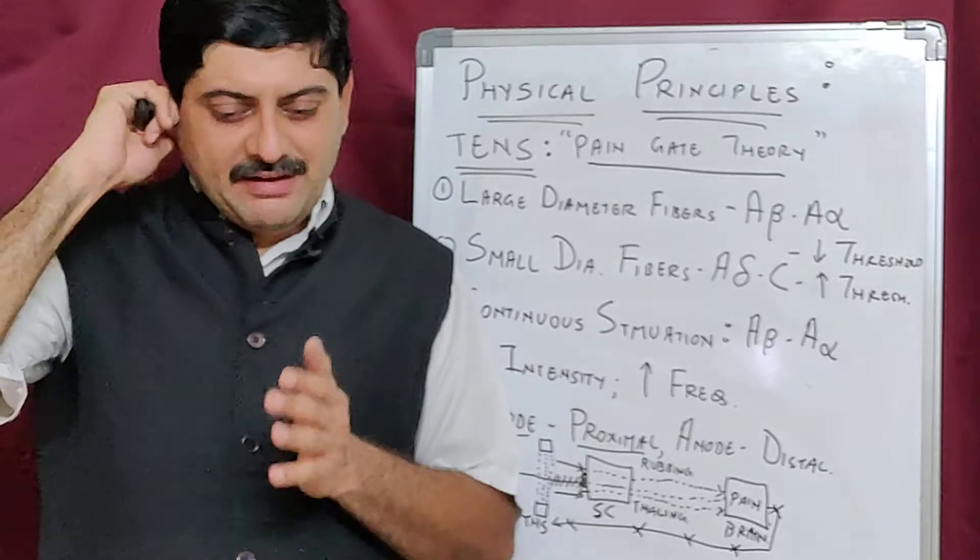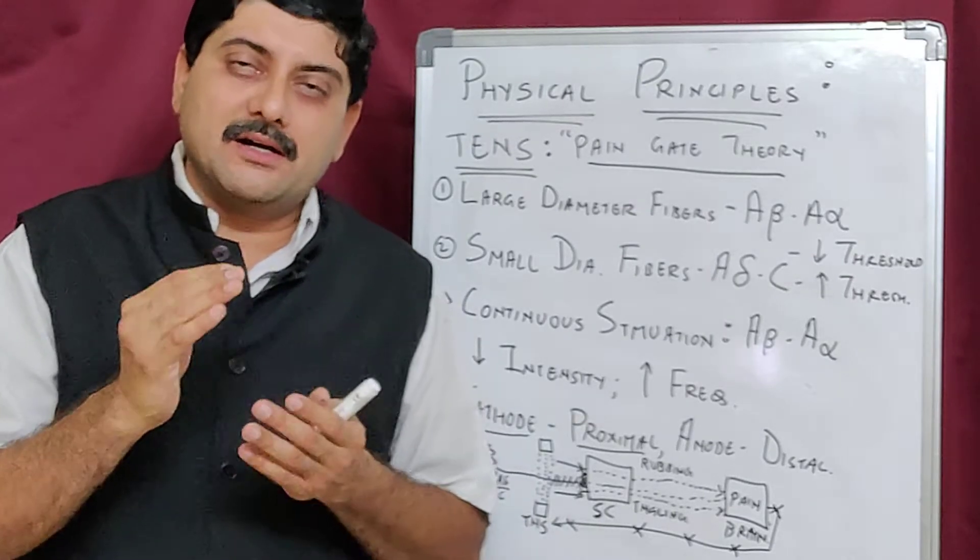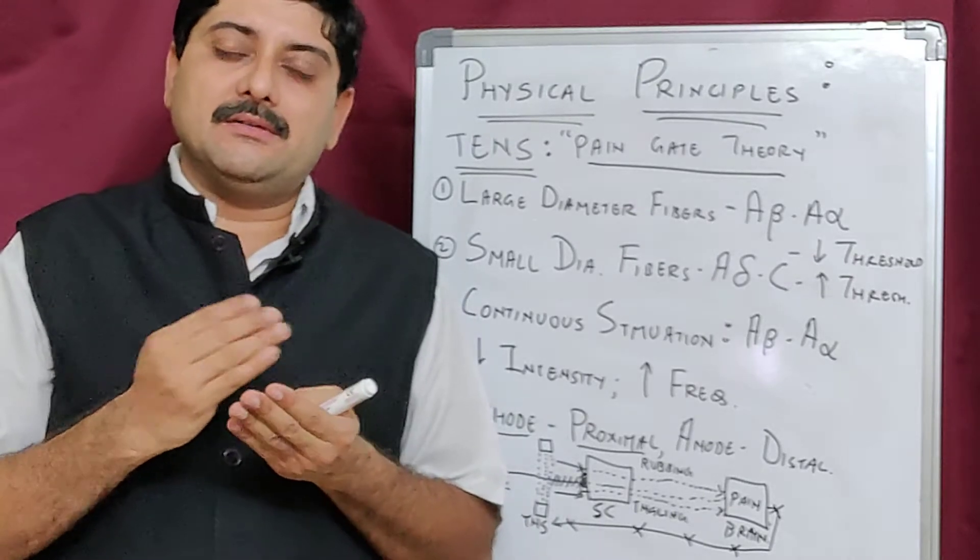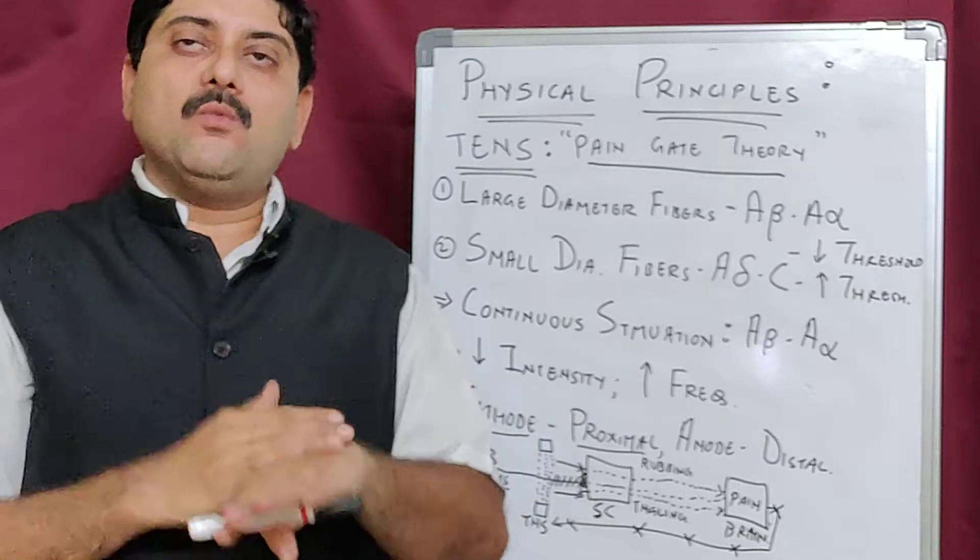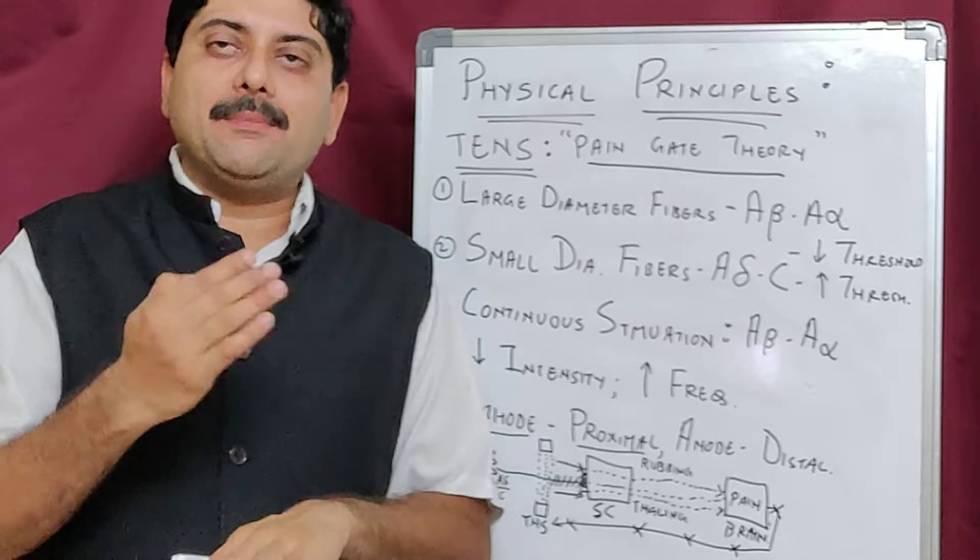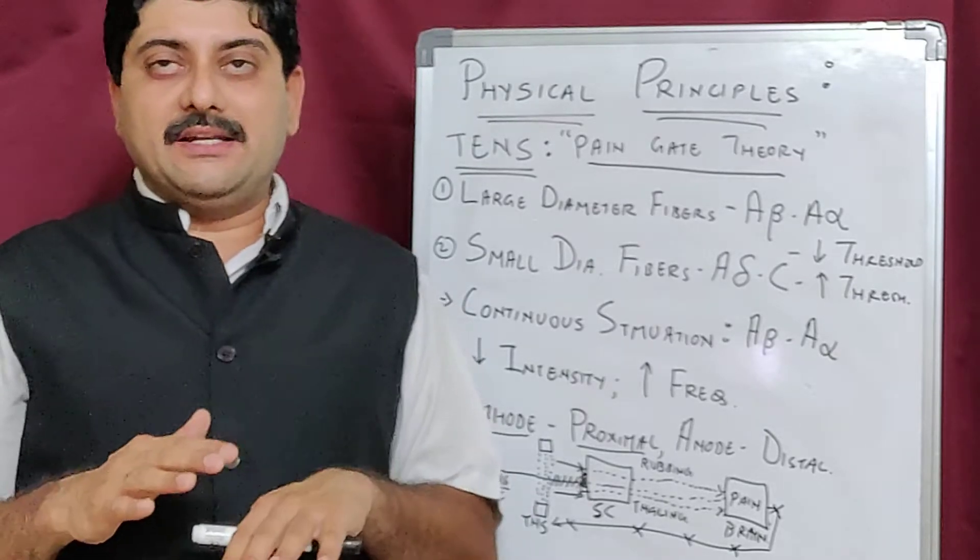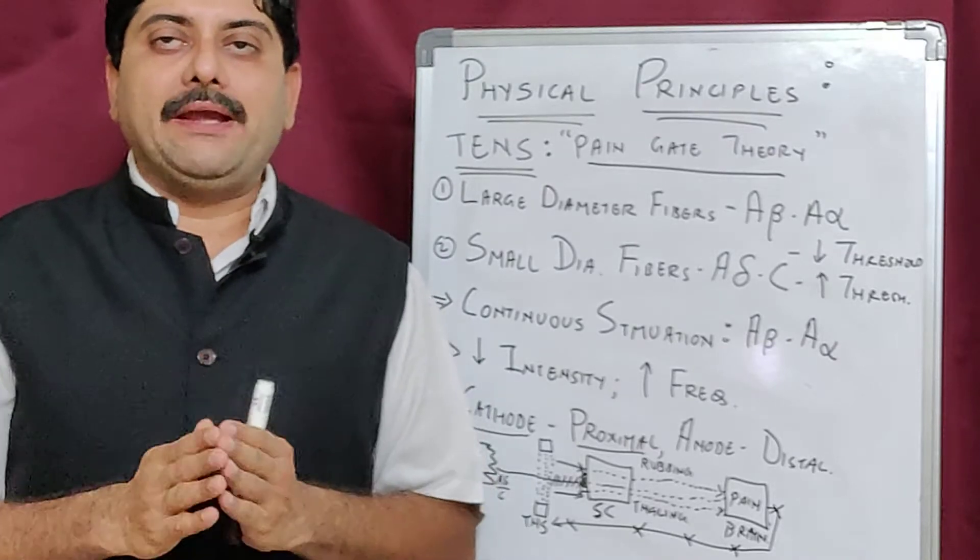Whenever we have pain and apply local chemicals on the skin, what do they do? When you apply any ointment or oil on the skin on the area where you have pain, what is the mechanism of action?